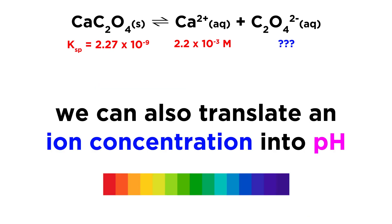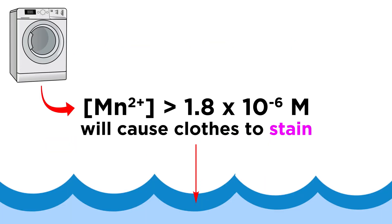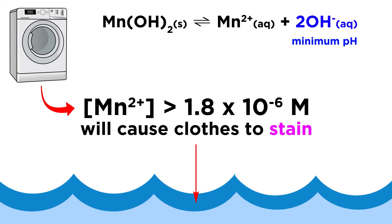This concept can be modified to translate an ion concentration into a pH when acidity and basicity are concerned. An application of this is that water with a manganese ion concentration above 1.8 times 10 to the negative 6 moles per liter will stain clothing when doing laundry, which is why manganese concentration is sometimes reduced by adding base. If the pH is maintained above a certain level, the manganese can precipitate as manganese hydroxide and will thus be unable to stain the clothing.